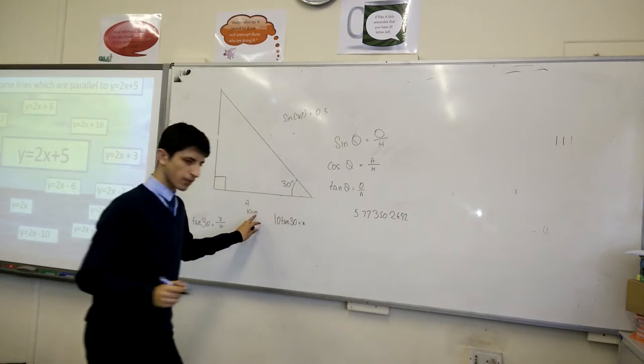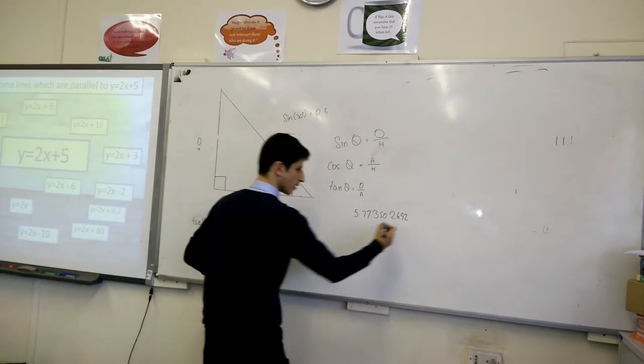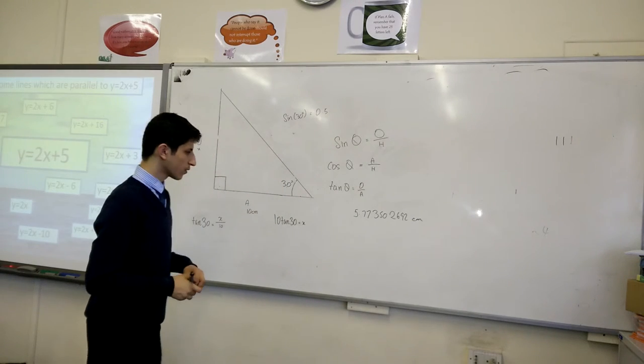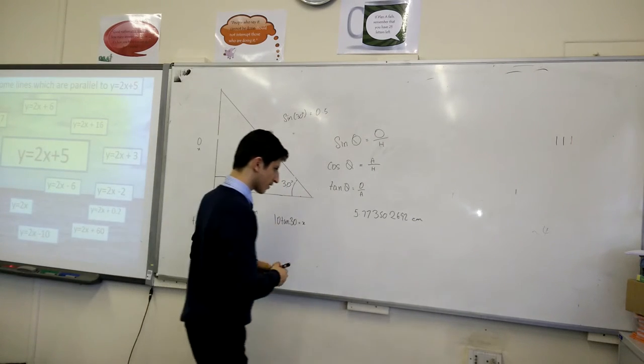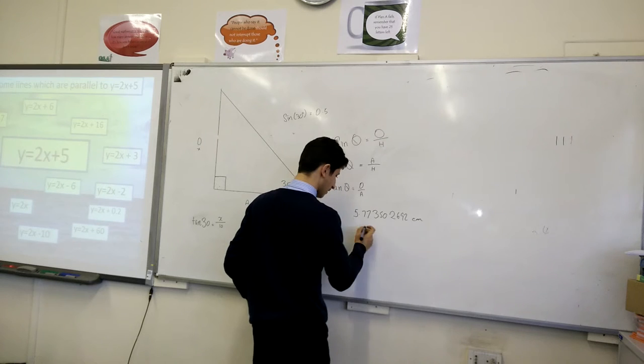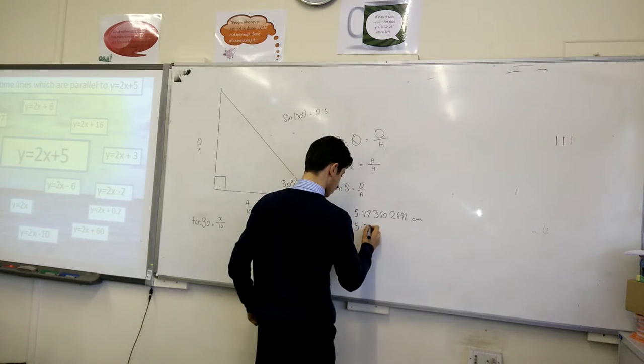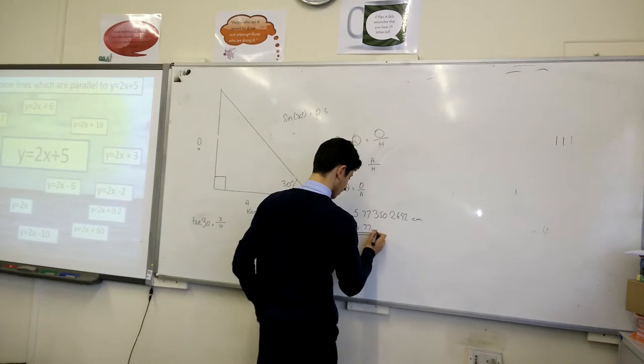Before we go further, you have to remember units. And also, they always give to three significant figures. Well, this one is going to keep it normal. 5.777.